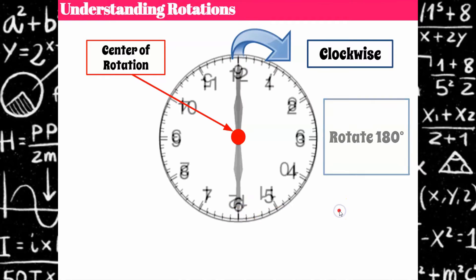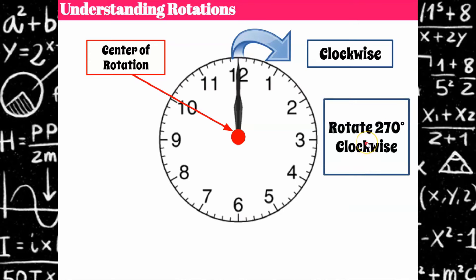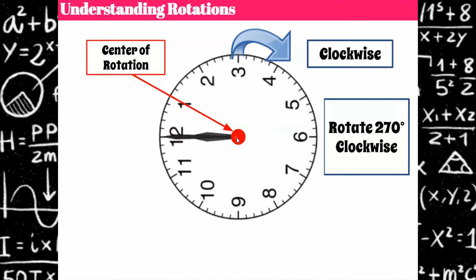Now the direction is rotate 270 degrees clockwise. We're going to go 90, 180, and an additional 90 to get to 270 degrees. The 12 travels around in a clockwise motion until it reaches that new location, and the center does not change. I want to mention that if you went counterclockwise 90 degrees, it would end up with the same image. So a rotation 90 degrees counterclockwise gives the same result as rotating 270 degrees clockwise.